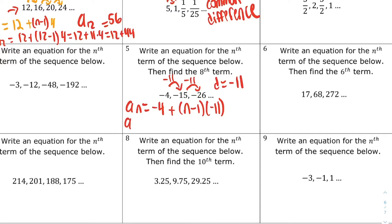Now let's use that to find a_8. That would be negative 4 plus 8 minus 1 times negative 11, which is negative 4 minus, because that 11 is negative, 7 times 11 is 77, so negative 4 and negative 77 together make negative 81. So a_8 equals negative 81.